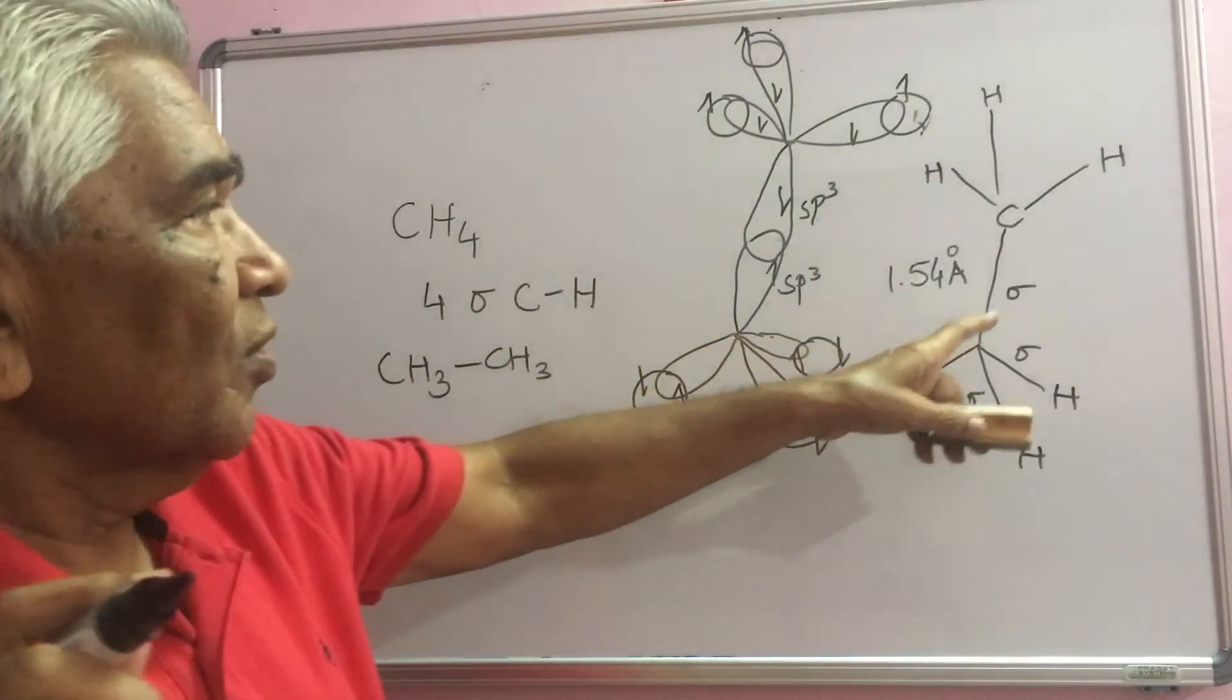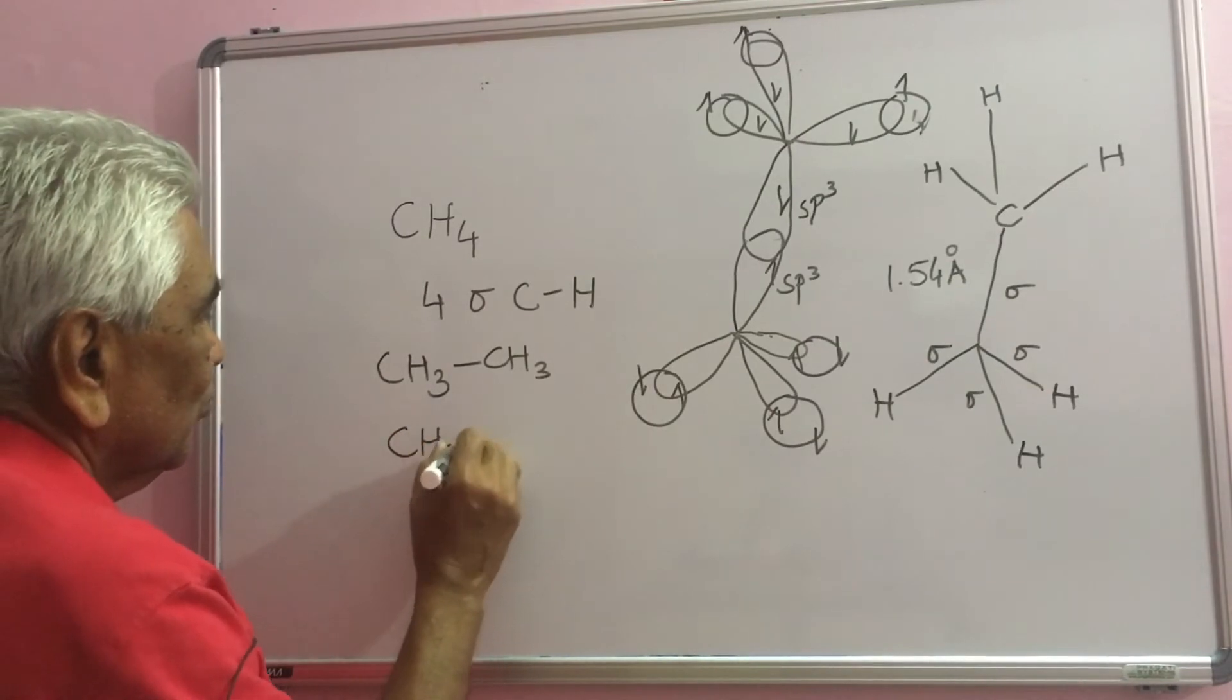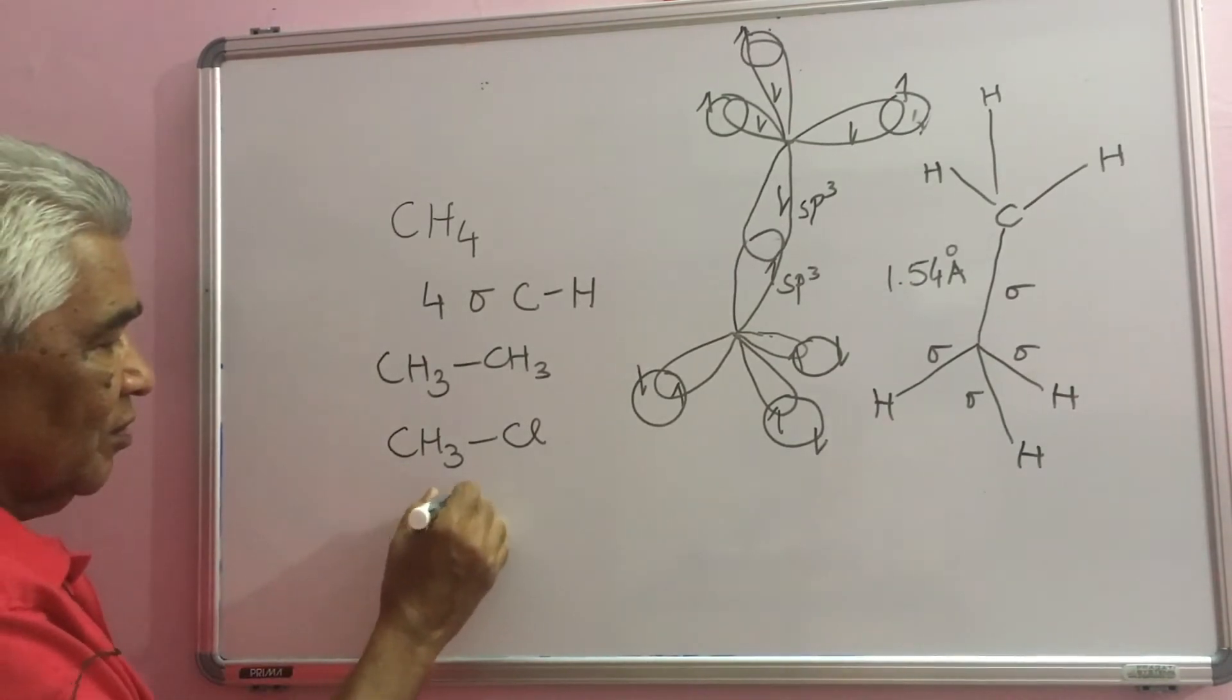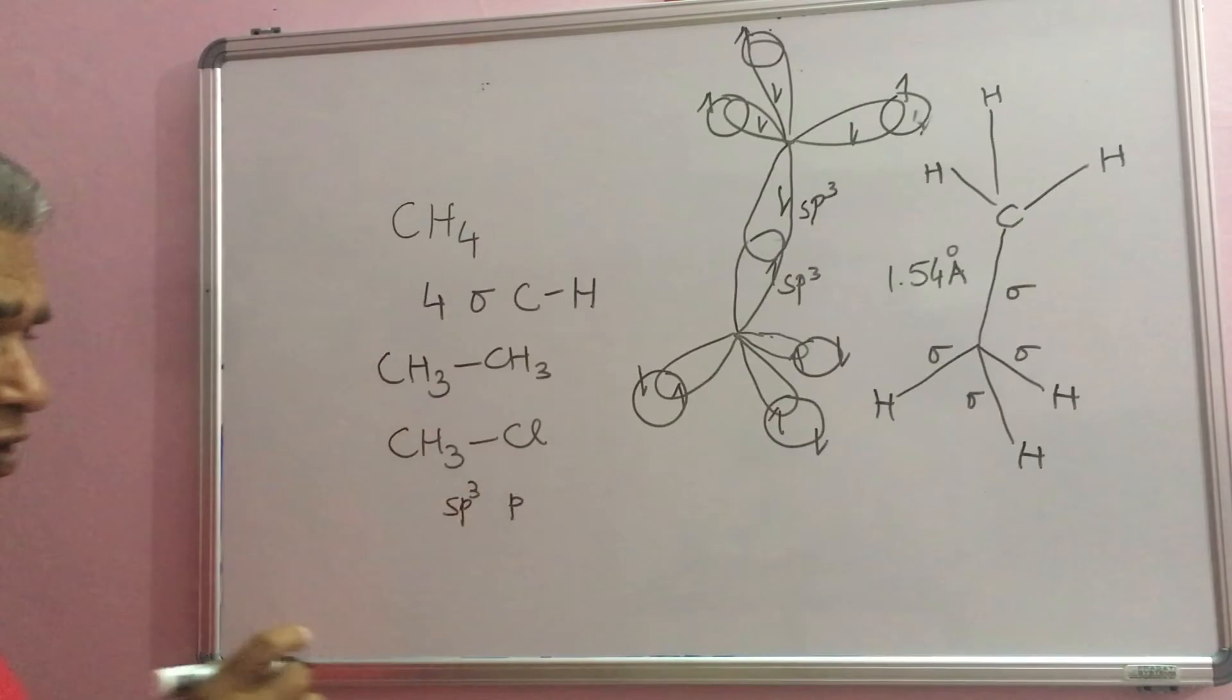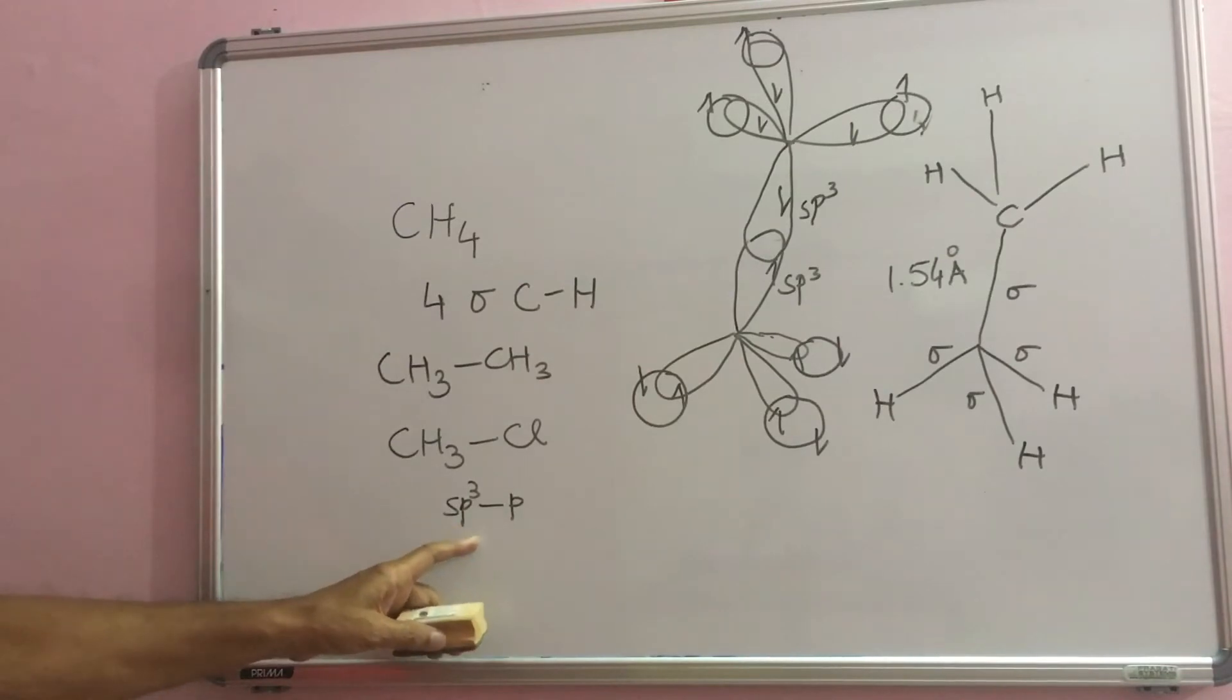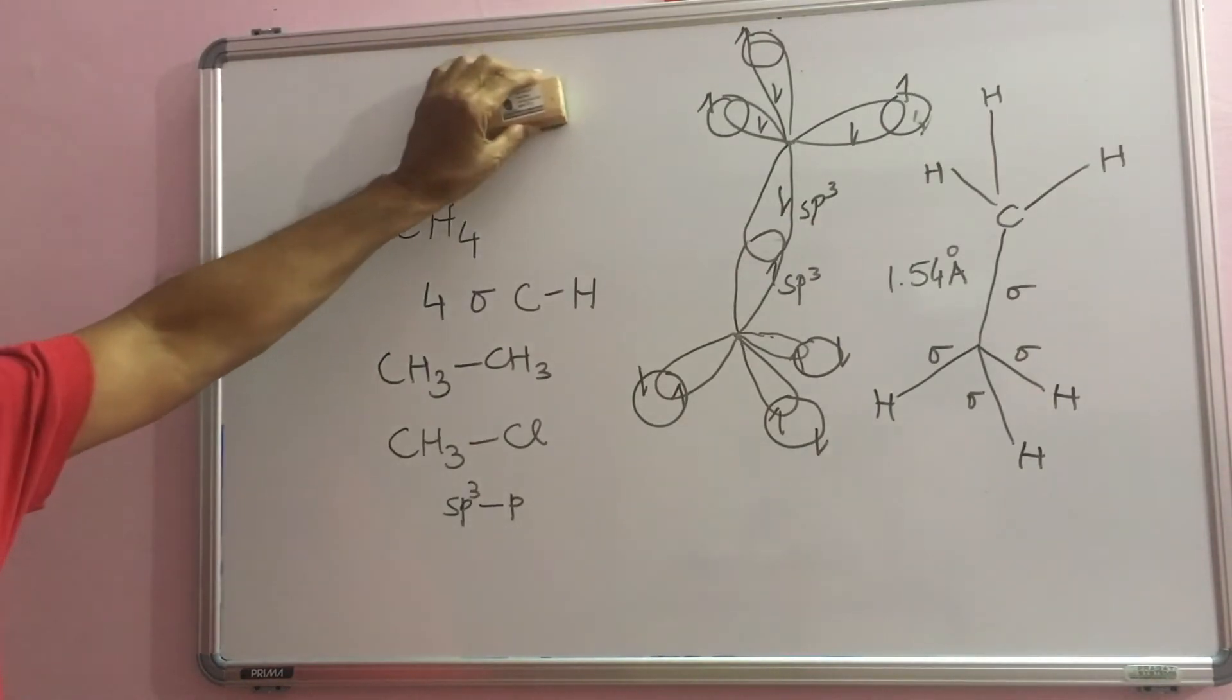This is the representation for ethane molecule. In a molecule like CH3Cl, the sp3 hybridized carbon provides one sp3 orbital and the chlorine atom provides its p orbital having 1 electron. This sp3-p overlap forms a C-Cl bond. This is single bond formation by carbon atoms.